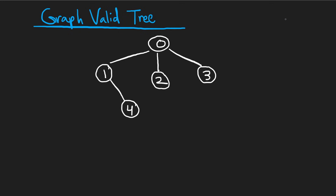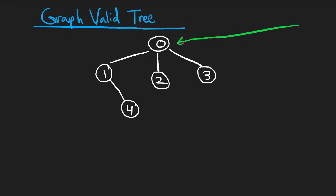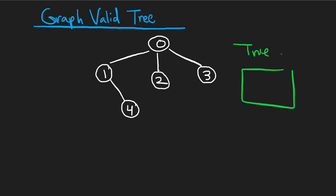Let's say we were given a graph like this — is this a valid tree? Just by looking at it we can tell yes. But what algorithm can we use? We'll start at node zero because every graph is going to have at least a node zero. If we don't have any nodes at all, we can return true — an empty graph does technically count as a tree.